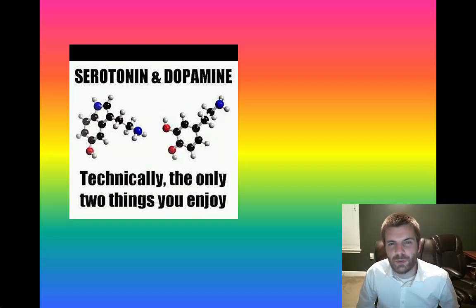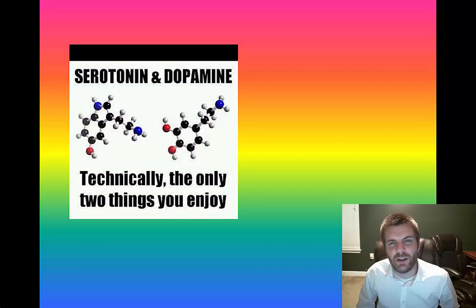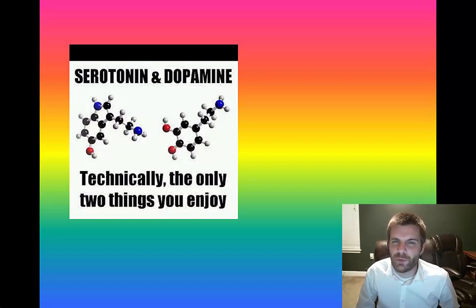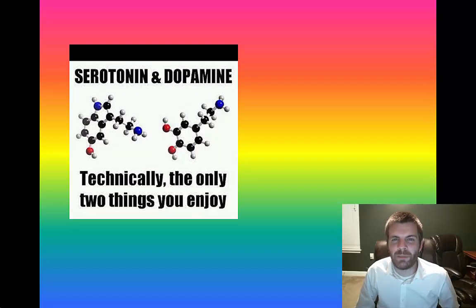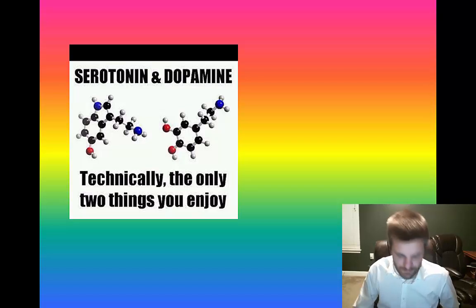This concludes a brief overview of some of the neurotransmitters. There are a few others you may want to check out, such as glutamate and GABA — those are probably the most common ones for AP Psychology, but there are certainly many more to explore. Thanks for watching, and I hope to see you next time.